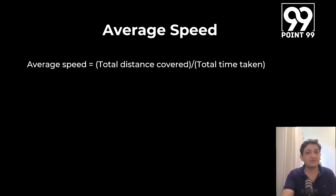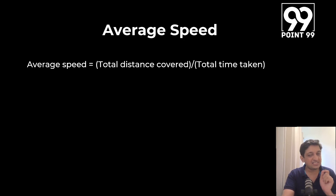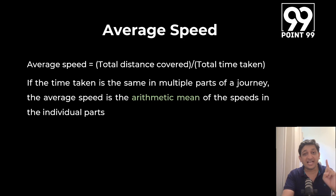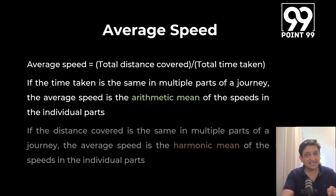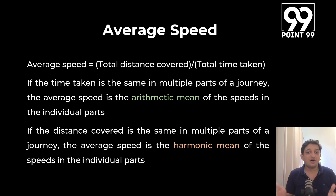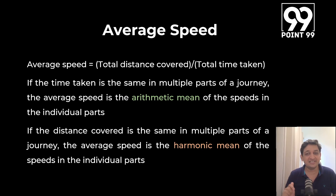Average speed is nothing but total distance covered upon total time taken — it is not the average of the individual speeds. However, in special cases: if the time taken is the same in multiple parts of the journey, the average speed will be the arithmetic mean of the individual speeds. If the distance covered is the same in multiple parts, the average speed is the harmonic mean of the individual speeds. Question for the comment section: what if the speed is the same in each part of the journey?